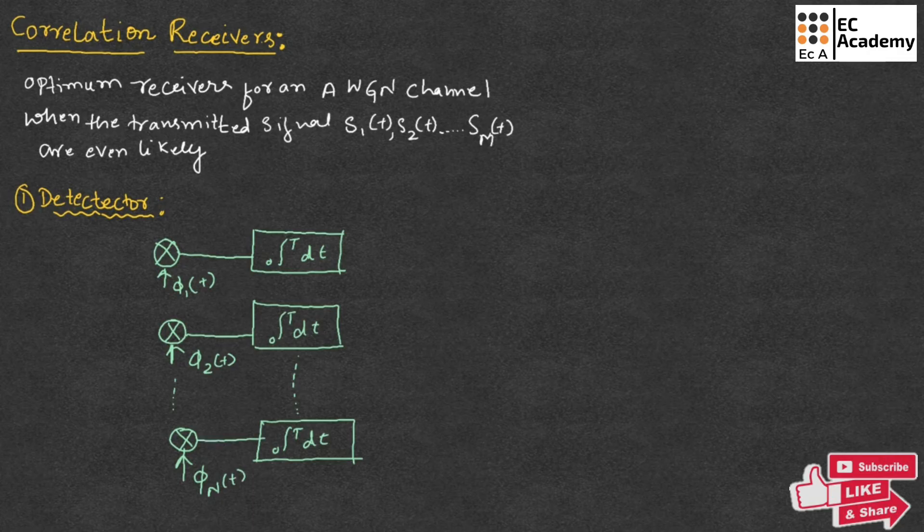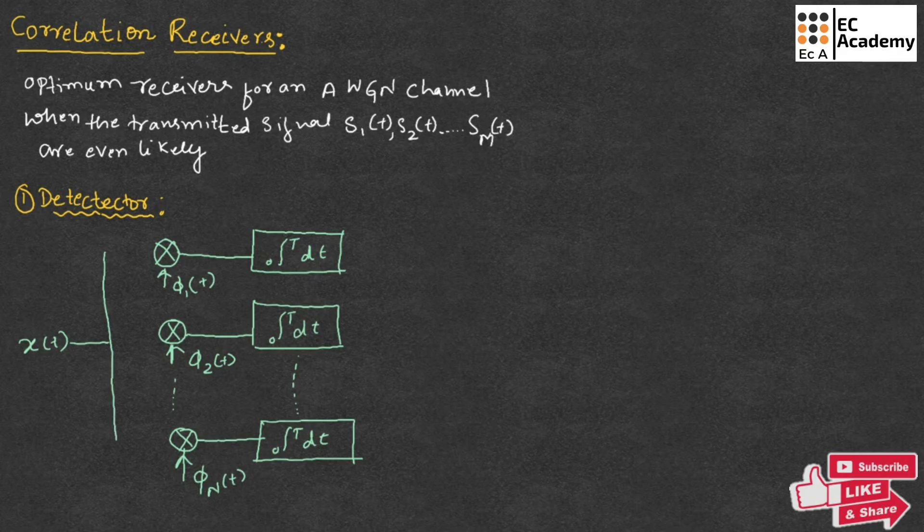So these orthonormal basis functions are generated locally. So these bank of correlators will operate on the received signal X of T. So X of T is the received signal. So on this received signal, these bank of correlators will operate.